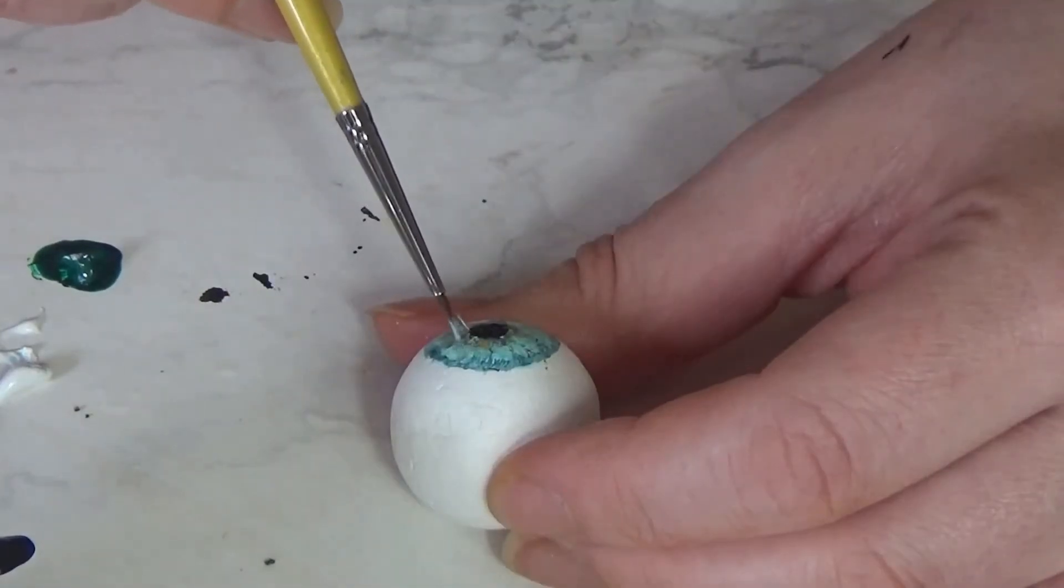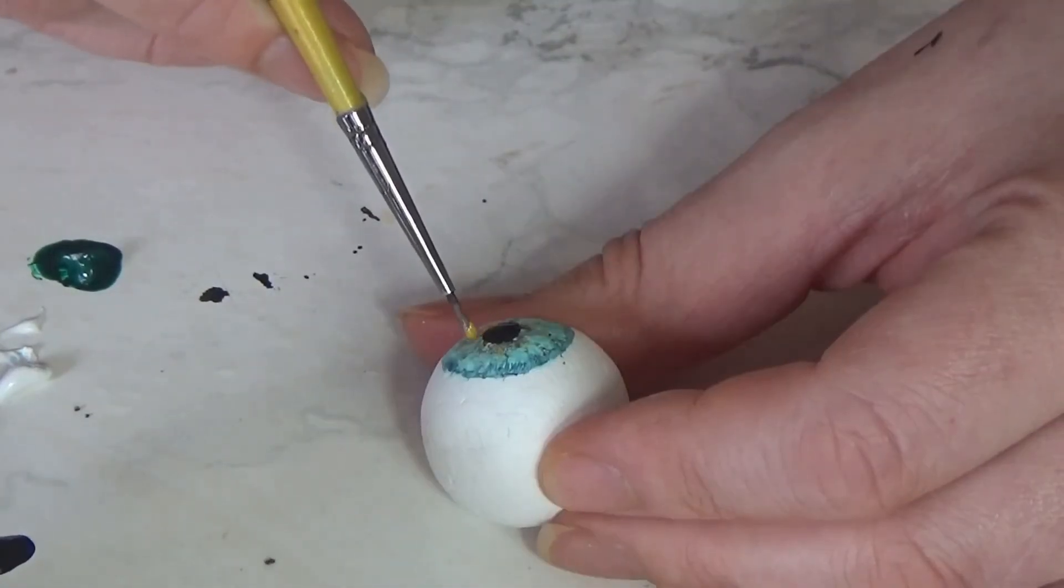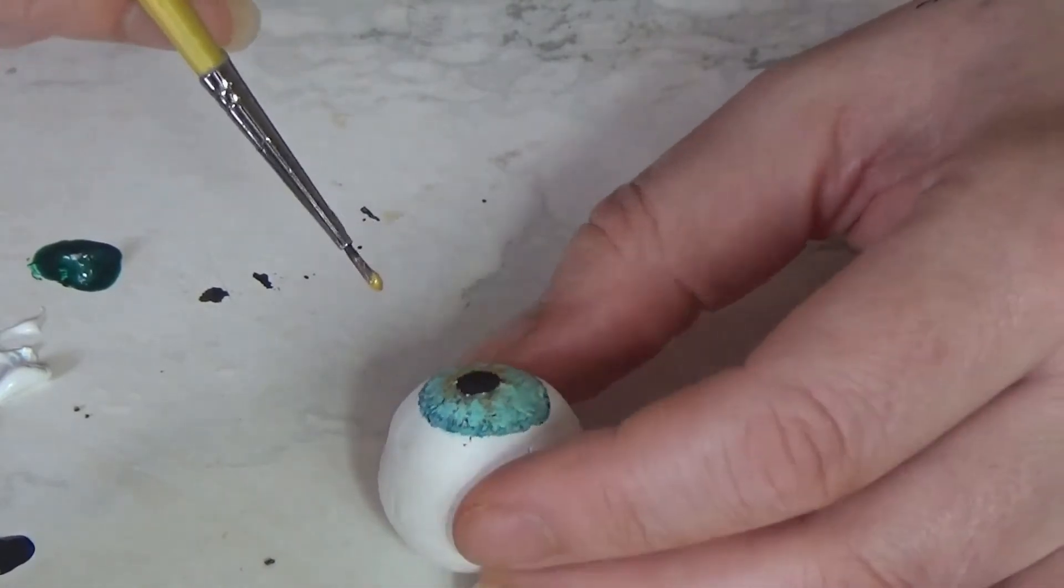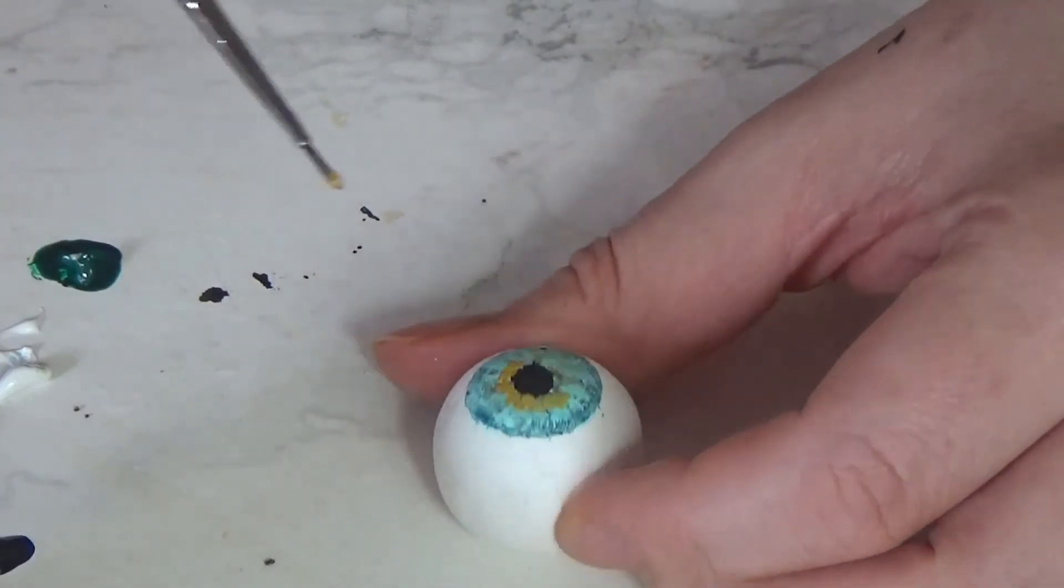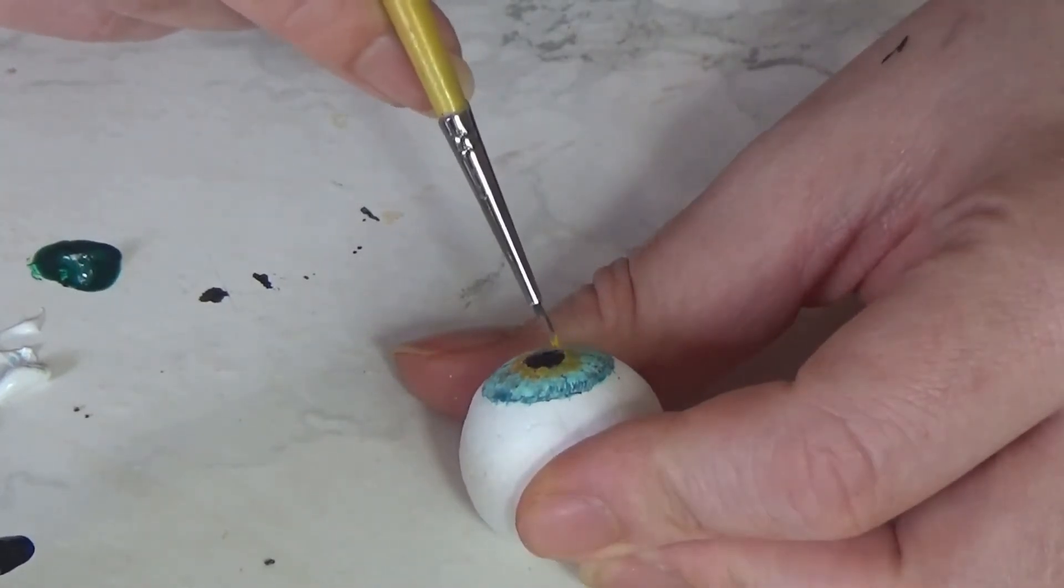Make sure you use a really fine small brush as well for your detail and just keep going in, stippling little bits of different colors and just kind of stippling them in and blending them.